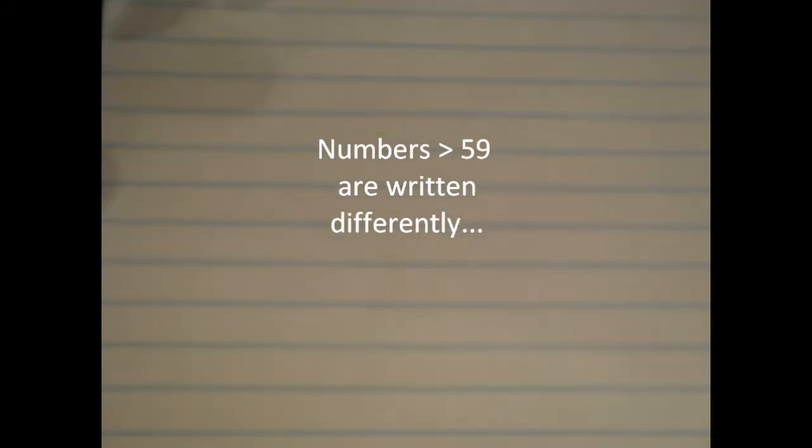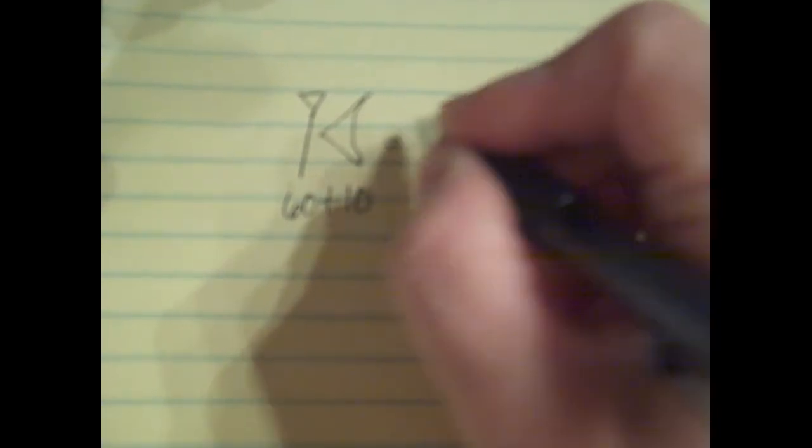Now, I'm going to demonstrate how to write higher numbers in the Babylonian numerical system. First, we're going to start with the cuneiform script for 60. 60 is actually very easy to do. It's simply the number 1 with a longer stem. And then, we can do the number 70 by simply adding the number 10 next to 60. So, when they're next to each other, it means that you can just add them. So, this is 60 plus 10 equals 70.